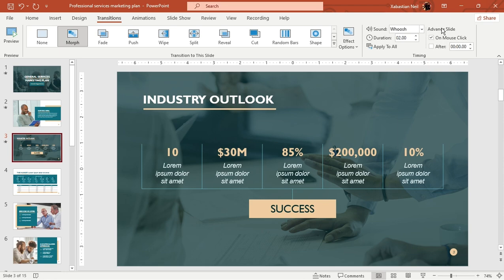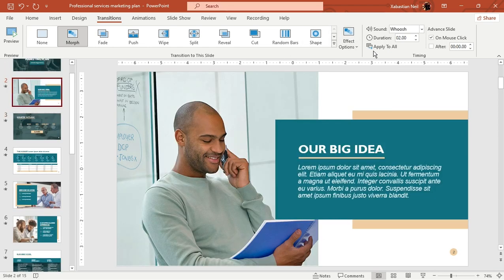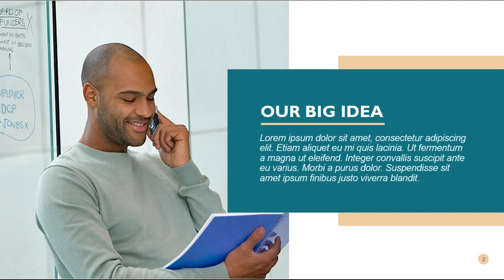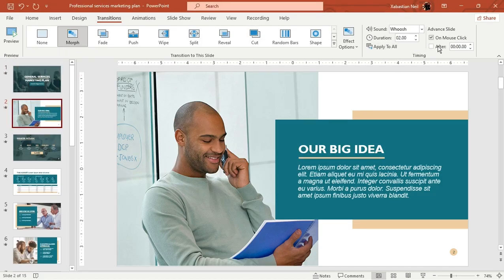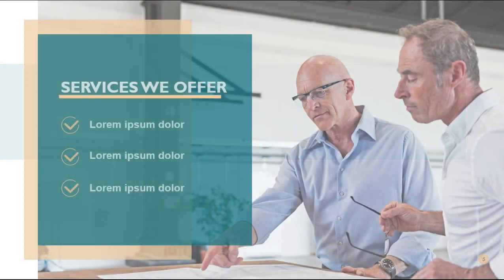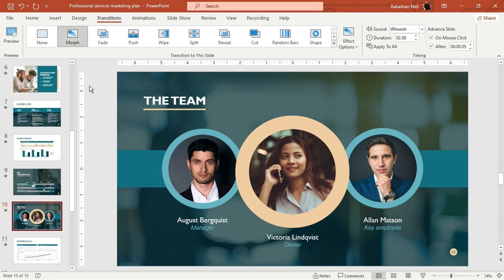That's how the Advanced Slide option works. If you want to apply this timing to all slides, click Apply to All. After applying, all slides will advance automatically at the set interval — without using the navigation button or the mouse. You can see all the slides changing one after another automatically.